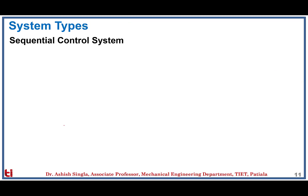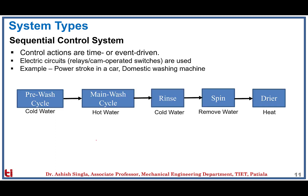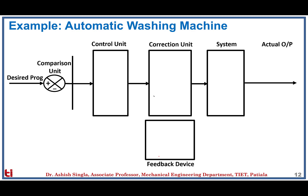Next we discuss the sequential control system, where control actions are either time-driven or event-driven. To execute these control actions systematically, logic circuits operated with relays or cam-operated switches are used. For example, in a car's power stroke, camshafts execute the power stroke in different cylinders with a set firing order. In a domestic washing machine, the controller executes steps like pre-wash, main wash, rinse, spin, and dry at different times — hence it is called a sequential control system.